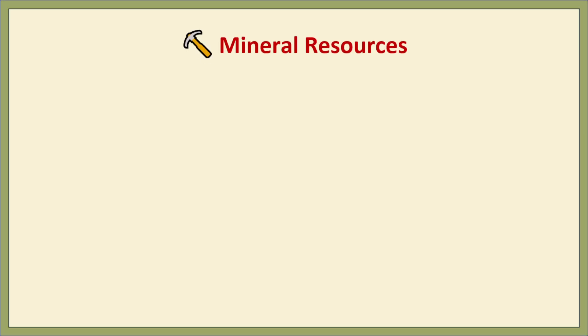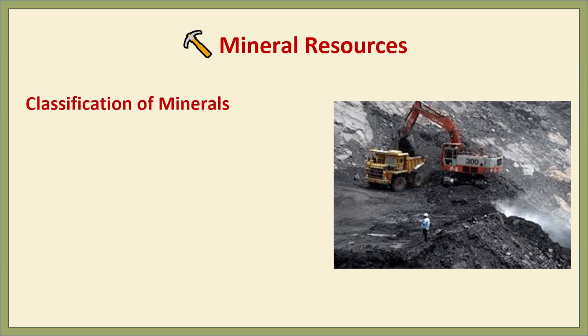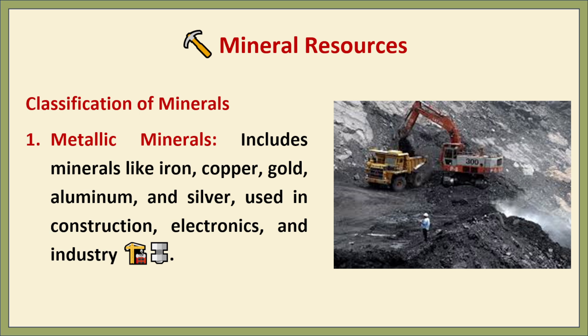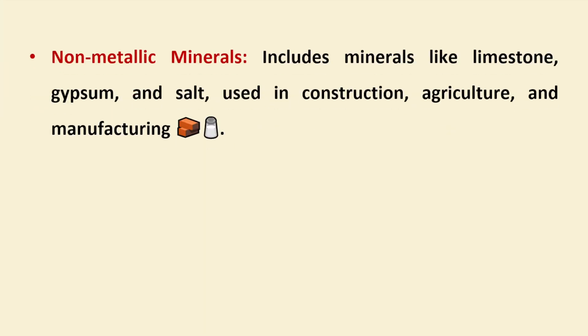Mineral resources. Classification of minerals. Minerals are naturally occurring substances found in earth's crust and are essential for modern infrastructure and everyday life. The first category is metallic minerals — these include iron, copper, gold, aluminium and silver. They are shiny, good conductors of electricity, and widely used in construction, electronics, machinery and transportation. Number two: non-metallic minerals such as limestone, gypsum and salt. They are generally softer and non-conductive, used in construction, agriculture and food processing.